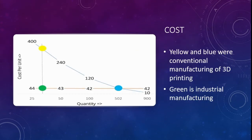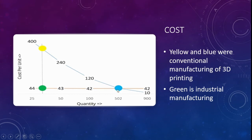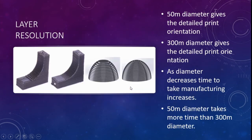Coming to cost: in this graph, yellow and blue represent 3D printing versus conventional manufacturing. The yellow line shows that cost per unit is high when quantity is low, but as quantity increases the cost becomes minimal. Most 3D printers aim to reduce cost from the yellow curve to the blue. The green line indicates general/conventional manufacturing, which remains constant regardless of quantity.